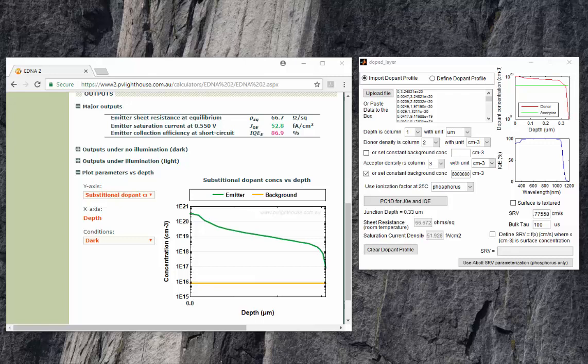Today we will compare two tools that are commonly used to calculate recombination in dope emitters in crystalline silicon solar cells.